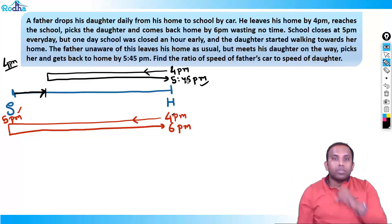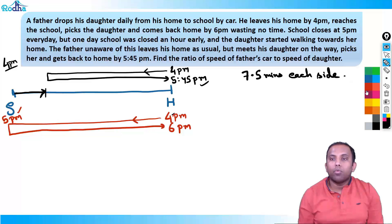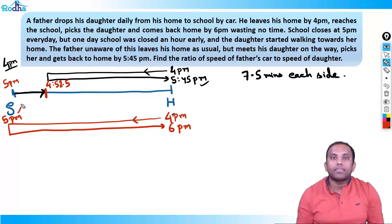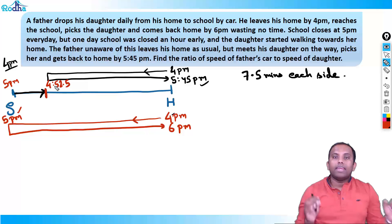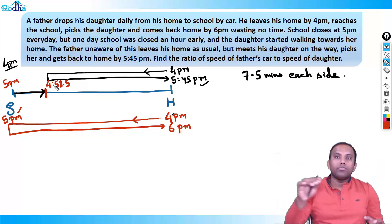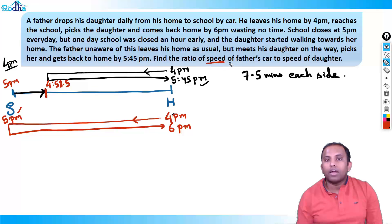He saves 15 minutes total — 7.5 minutes in the forward direction and 7.5 in the backward direction. He was supposed to reach school at 5 pm but saved 7.5 minutes, so he reached the meeting point at 4:52.5 (i.e., 4 hours 52 minutes 30 seconds). Now I have to find the ratio of the speed of the father's car to the speed of the daughter.